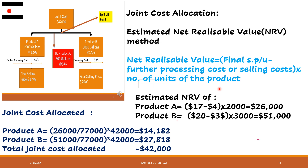For product A the NRV is 26,000 and for product B it is 51,000. Observe carefully that the final selling prices have been taken: 20 for product B and 17 for product A. Now we have the estimated NRVs of both products, and in this ratio we allocate the joint cost. Product A gets 26,000 divided by the total of 77,000 multiplied by 42,000, and product B gets 51,000 divided by 77,000 multiplied by 42,000. The total joint cost allocated to both products together is 42,000.